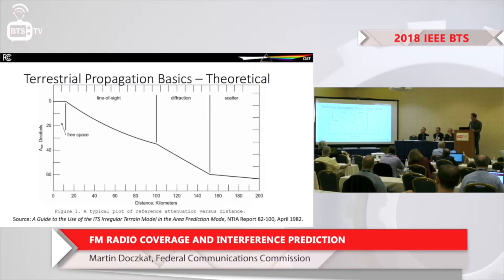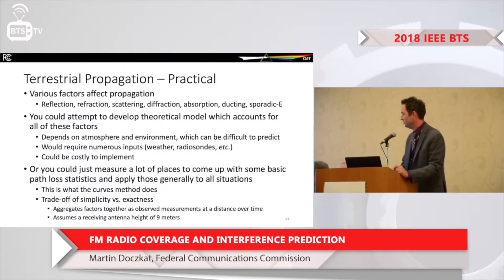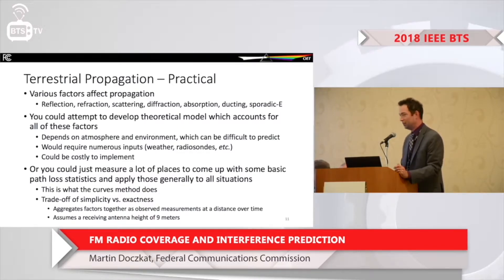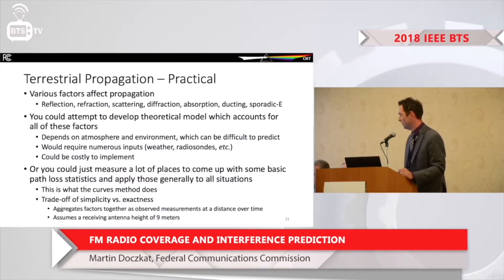Here's a typical path from NTIA Report 82-100 showing regions of propagation: free space, line of sight, diffraction, and scattering. Various factors affect propagation — reflection, multipath, refraction, scattering, diffraction — all occurring at different time intervals. You could predict all of these individually, but it would be expensive and require inputs like weather data. What the FCC did instead with propagation curves is aggregate everything using long-term statistics and measurements, assuming a certain receiver height and characteristics, producing curves representing a typical situation.